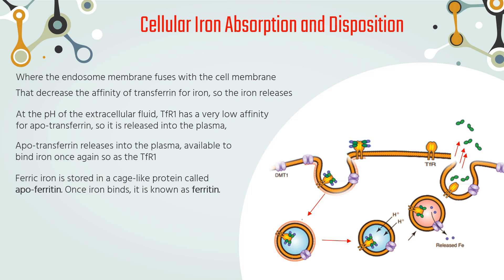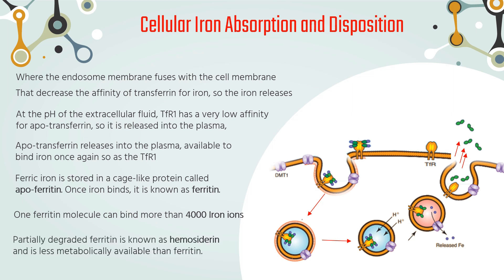Ferric iron is stored in a cage-like protein called apoferritin. Once iron binds, it is known as ferritin. One ferritin molecule can bind more than 4,000 iron ions. Partially degraded ferritin is known as hemosiderin and is less metabolically available than ferritin.